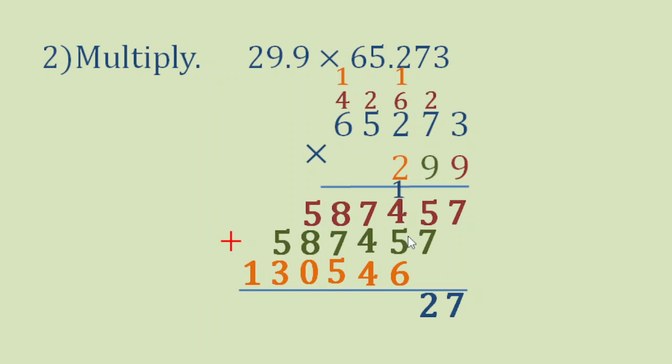1 plus 4 plus 5 plus 6 is 16. Bring down 6, carry 1. Then 1 plus 7 plus 4 plus 4 is 16. Bring down 6, carry 1.